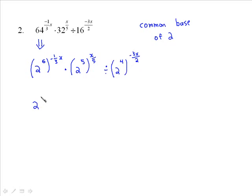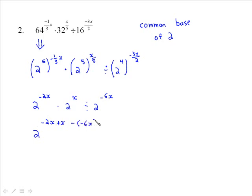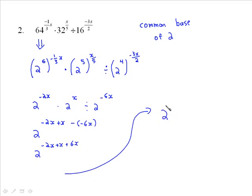6 times negative 1 third is going to be negative 2x — goodbye fraction, we didn't even have to put this in radical form. Then times 2: 5 times x over 5 leaves us with just x. Divided by 2: 4 times negative 3x over 2 gives us negative 6x. When we're multiplying the powers we add the exponents, so this becomes negative 2x plus x, then subtracting the one that's being divided, which is negative 6x. Doing it all in one step: negative 2x plus x plus 6x.